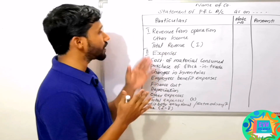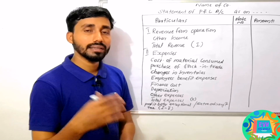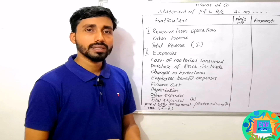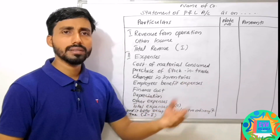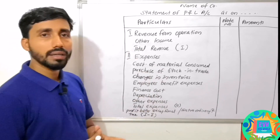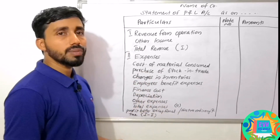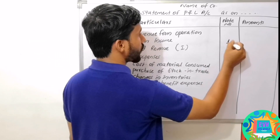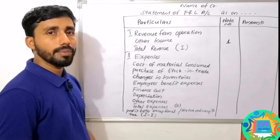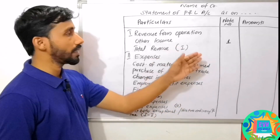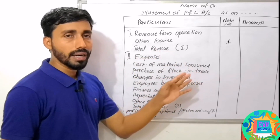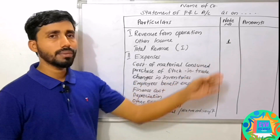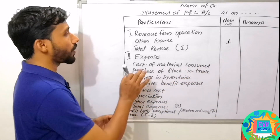We will discuss the revenue from operations. If we add some items, the total amount of that part is calculated. We will discuss the amount and the date of the statement. The statement will be prepared, and we will discuss the revenue from other income. Next, we have total revenue.